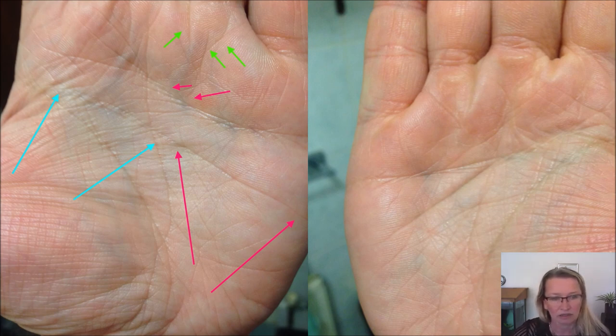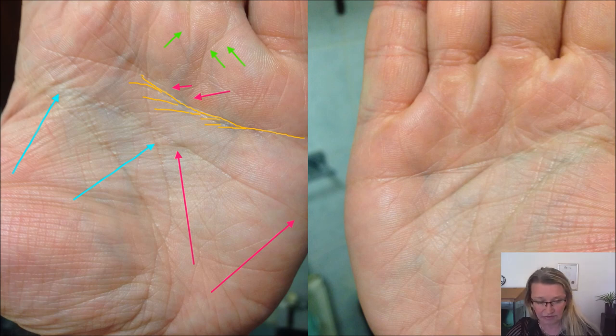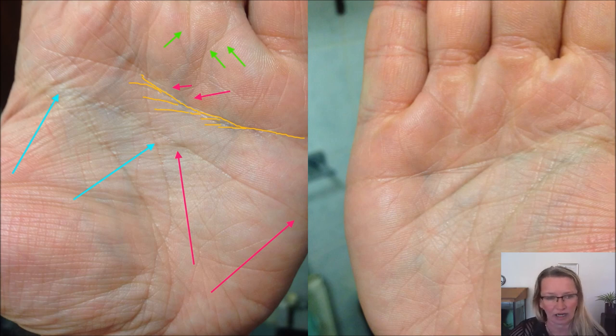Here is the heart line. And as you can see, there are many drooping lines. That is a sign of someone who is having periods of negative attitude or negative feelings. Feelings because it's on the heart line.